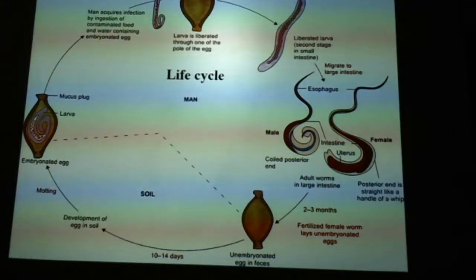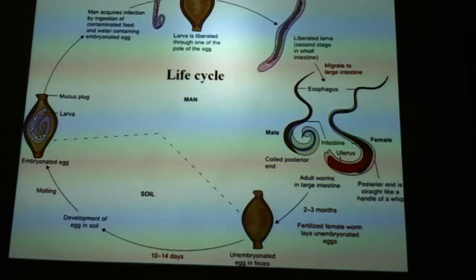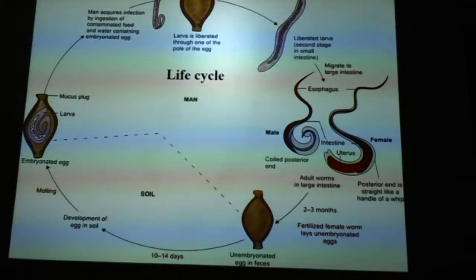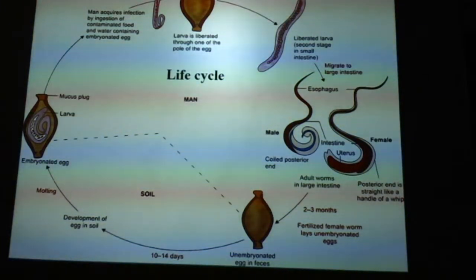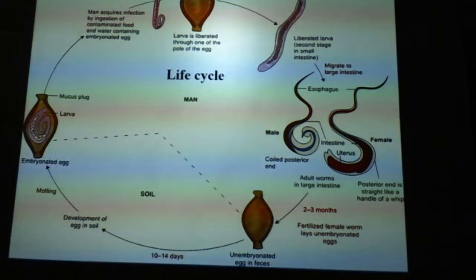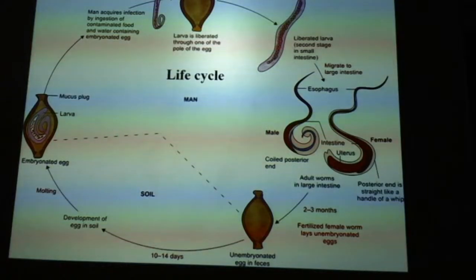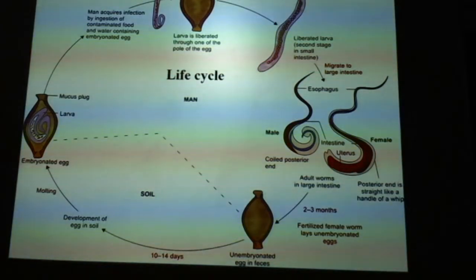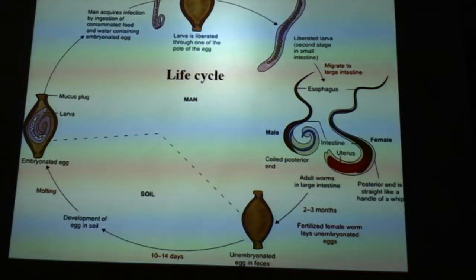Man acquires infection by ingestion of contaminated food and water containing embryonated eggs. Like other parasites, this is also accidental intake. Larvae are liberated through one of the poles of the egg — through the mucus plug. The liberated larva is now in the second stage. Once it comes out of the egg, it becomes a second-stage larva, which will be present in the small intestine.